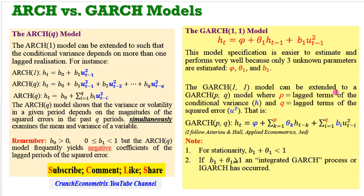The GARCH(1,1) model can also be extended to a GARCH(P,Q) model, where P represents the lagged terms of the conditional variance H, and Q represents the lagged terms of the squared error, as specified here. I follow specifications dictated by Asteriou and Hall in their textbook Applied Econometrics. I know that in some textbooks the P lags are associated with the ARCH terms while Q lags are associated with the GARCH terms, but in Asteriou and Hall it is the reverse — P lags are associated with GARCH and Q lags are associated with H. So I follow Asteriou and Hall's specification.